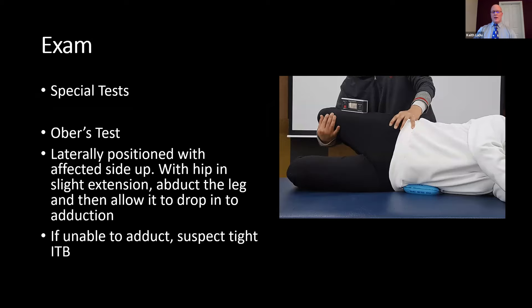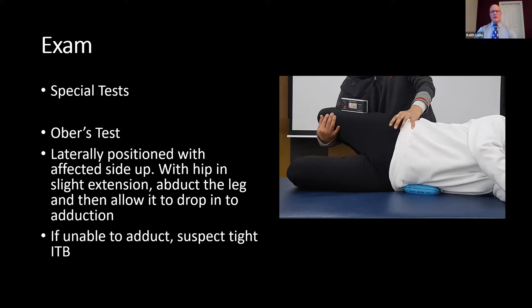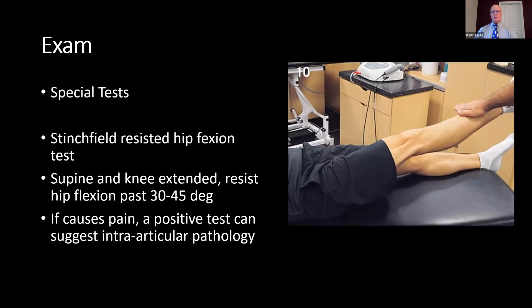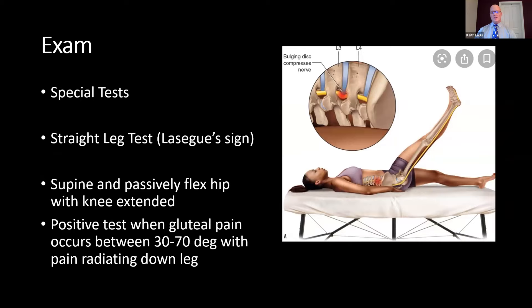Ober's test has the patient positioned laterally with the affected side up. You abduct the hip and extend it, then let the leg drop towards the table into adduction. If it does not adduct, you suspect a tight iliotibial band. The Stinchfield resisted hip flexion test has the patient supine with knee extended; you resist hip flexion from about 30 to 45 degrees. If this causes pain, it's concerning for intraarticular pathology. The straight leg test — positive when there is gluteal pain or radiating pain down the leg between 30 to 70 degrees.